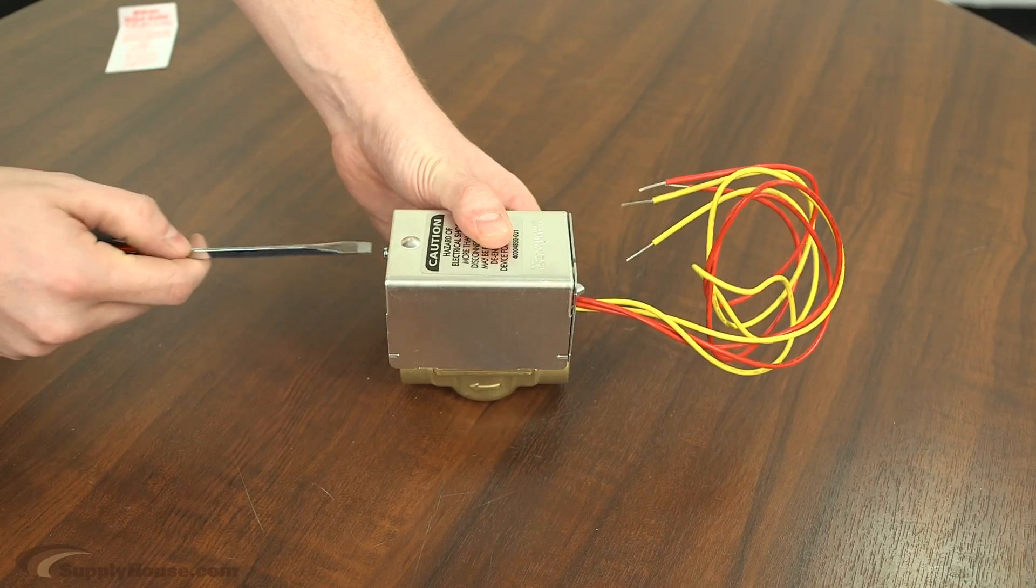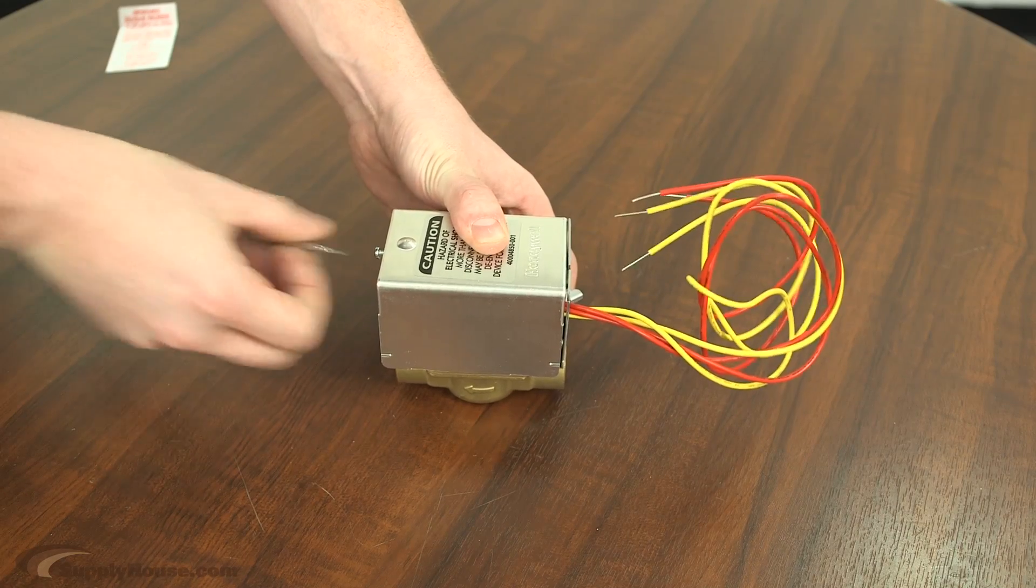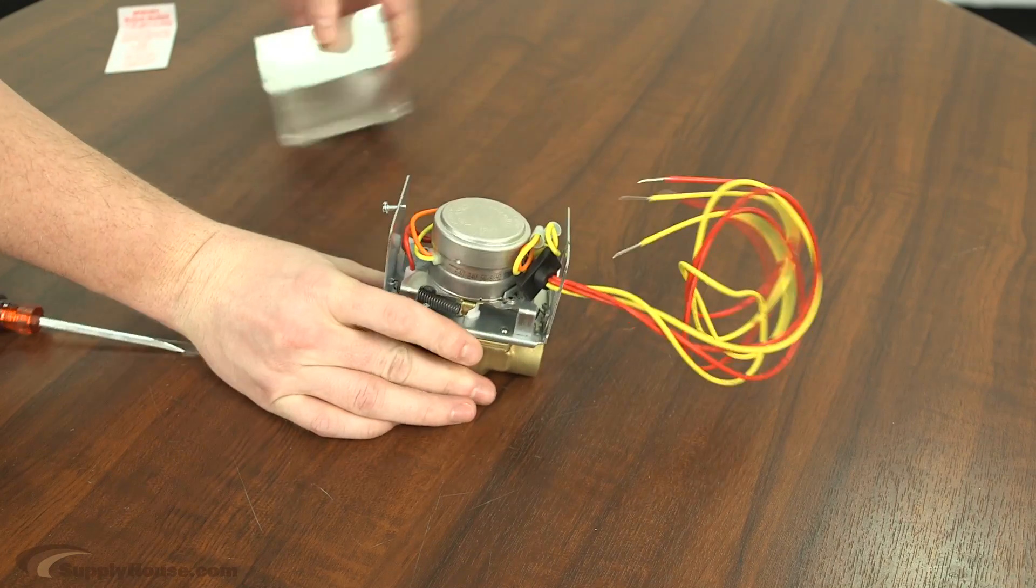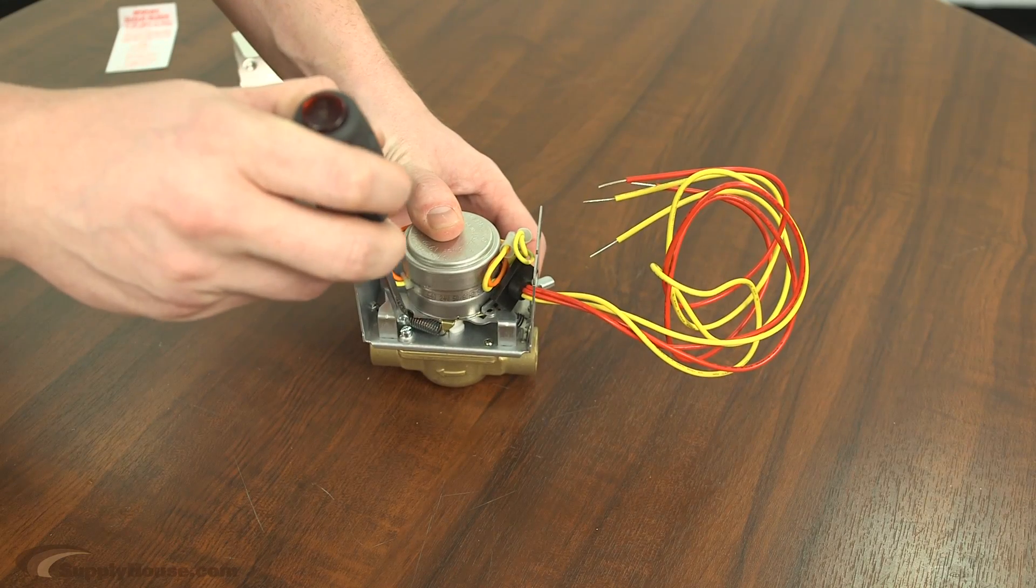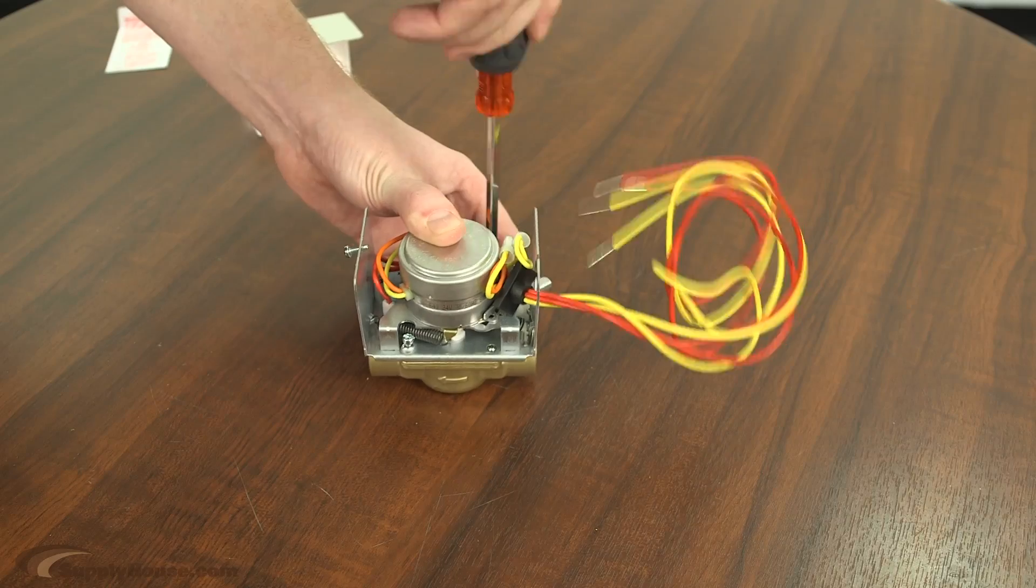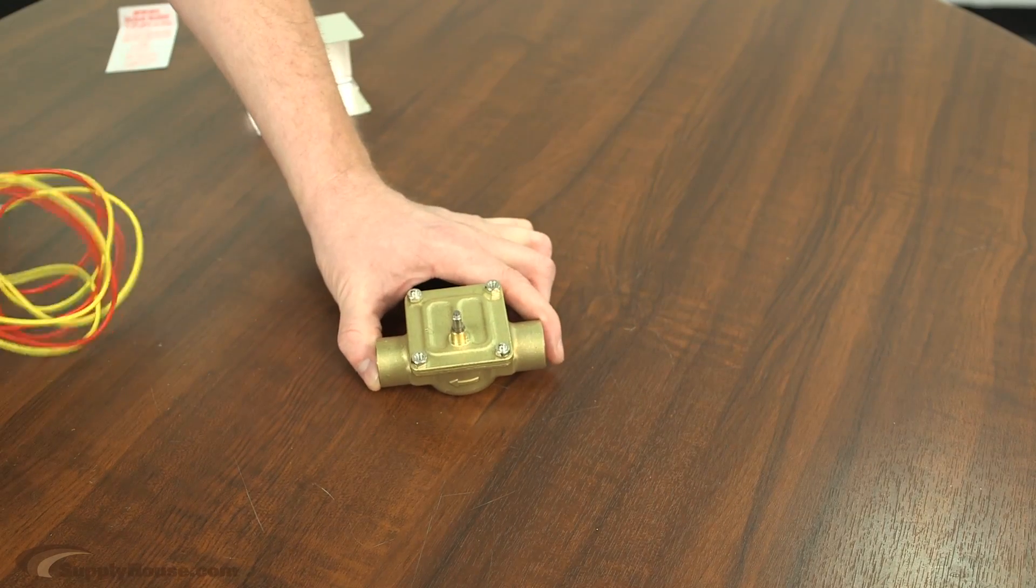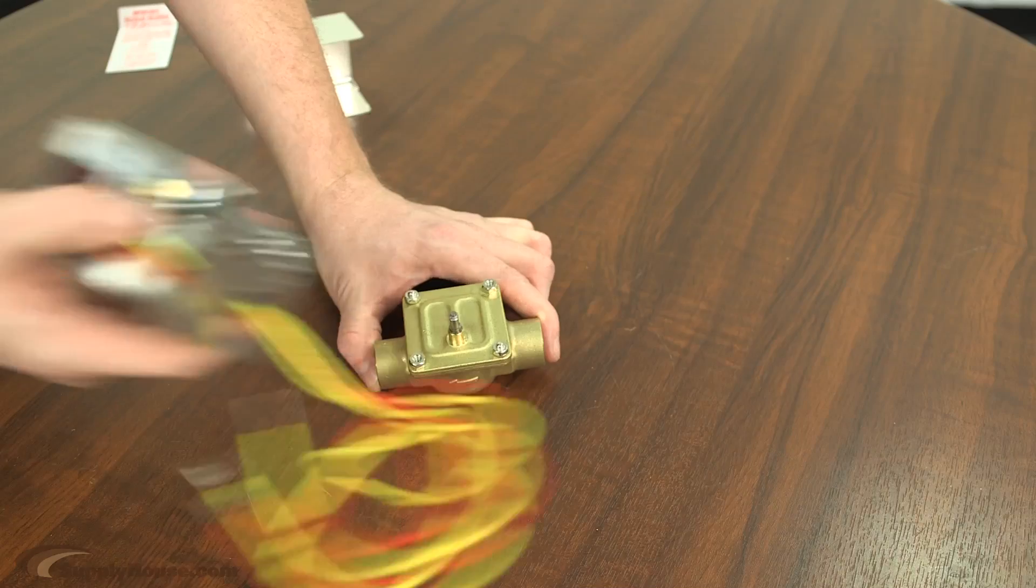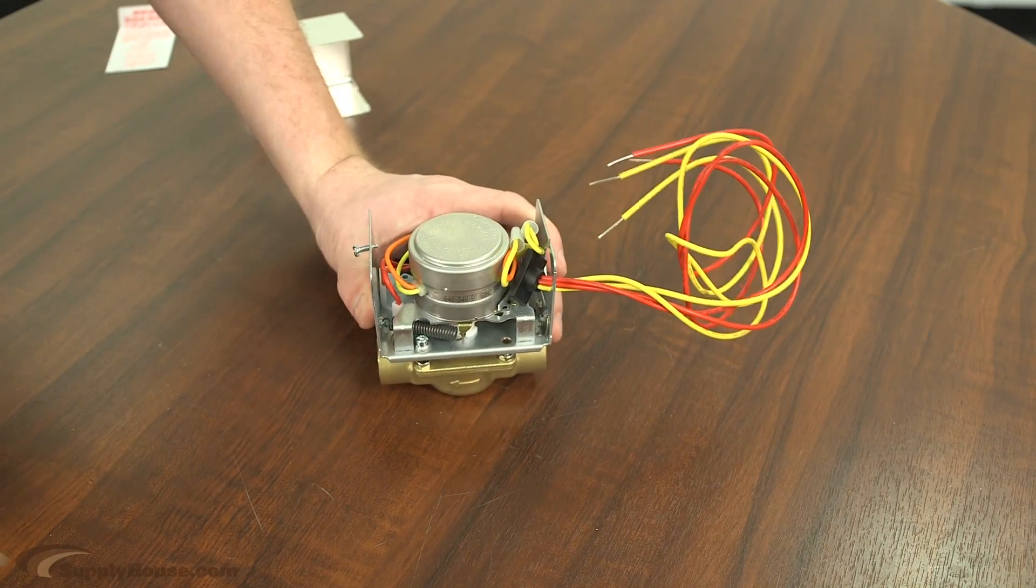For the Honeywell zone valves, you need to remove the cover. Then you have to unscrew the actuator from the valve body. There's two screws diagonally from each other. Once the screws are done, you just pop that bad boy off, put on the new one, screw it back in, and rewire it.